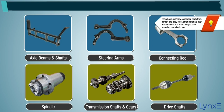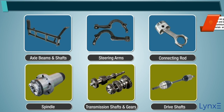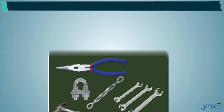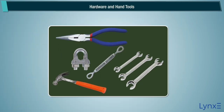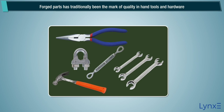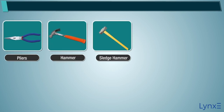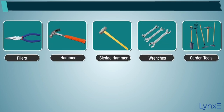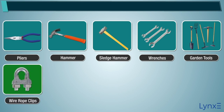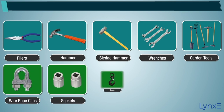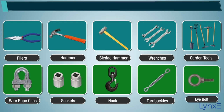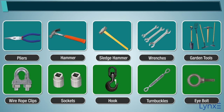Though we generally see forged parts from carbon and alloy steel, other materials such as aluminium and micro-alloyed steel are also in use. Forged parts have traditionally been the mark of quality in hand tools and hardware. Pliers, hammers, sledges, wrenches and garden tools, as well as wire rope clips, sockets, hooks, turnbuckles, and eye bolts are common examples.